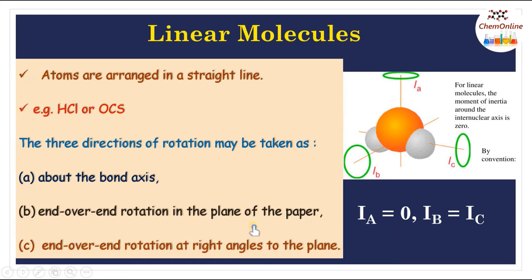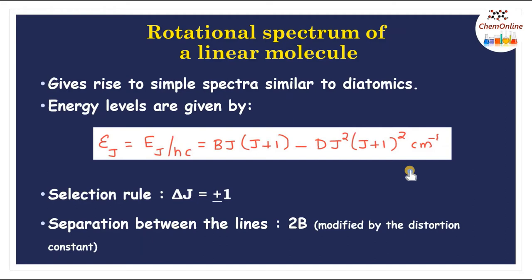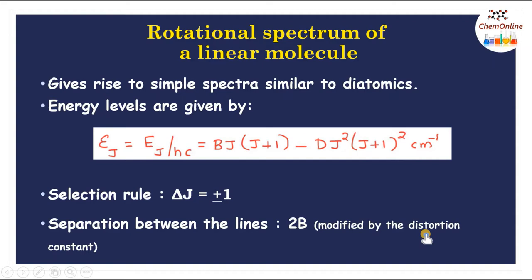The second rotation is end-over-end rotation in the plane of the paper, and the third is end-over-end rotation perpendicular to the plane. These two rotations are equivalent, so I_b = I_c. Since Iₐ = 0, a linear molecule gives rise to a simple spectrum similar to diatomic molecules. The energy levels are given by ε_J = BJ(J+1) − DJ²(J+1)² cm⁻¹ (including the centrifugal distortion term). The selection rule is ΔJ = ±1, and the separation between lines is 2B, modified by the distortion constant.